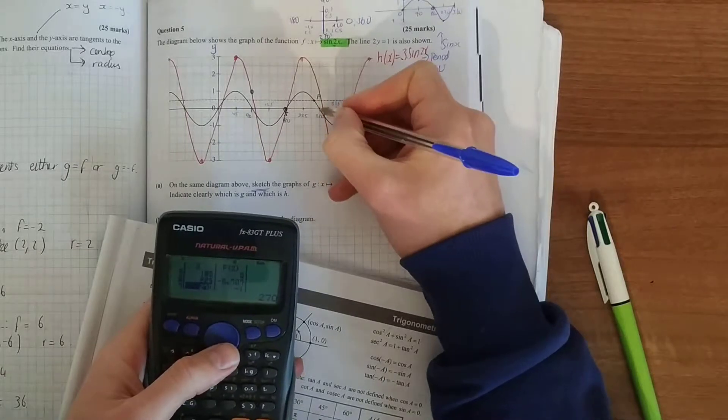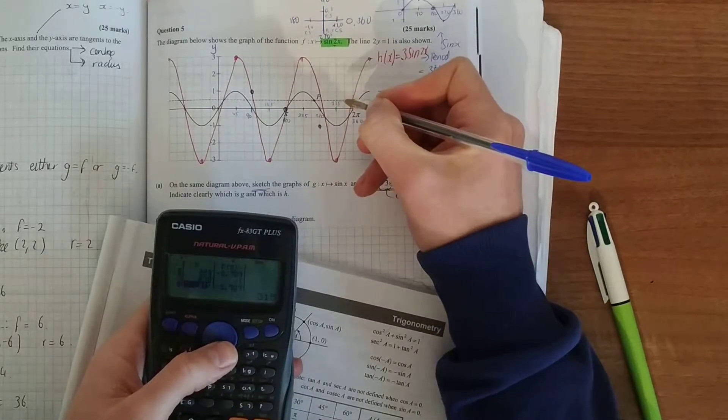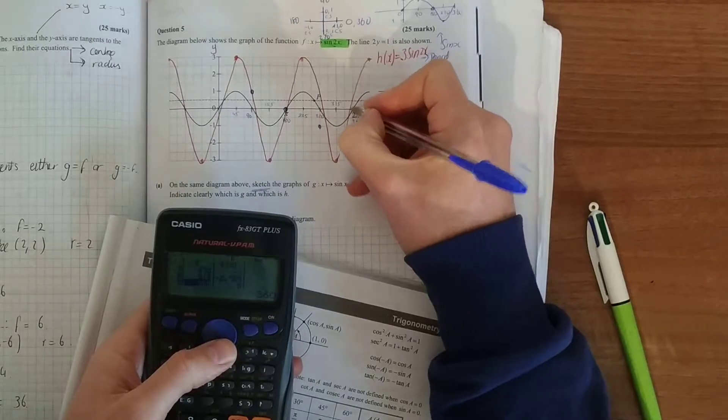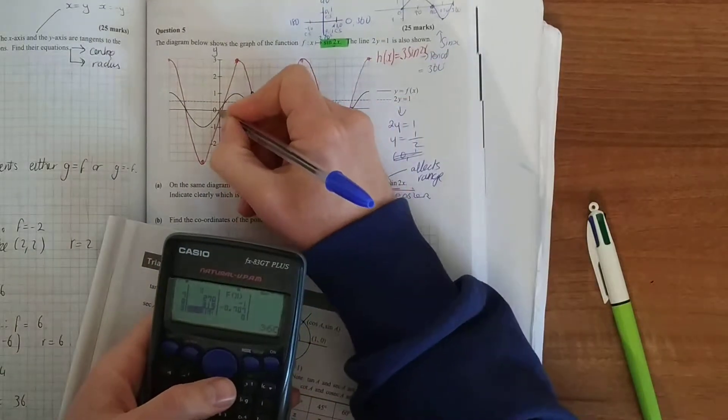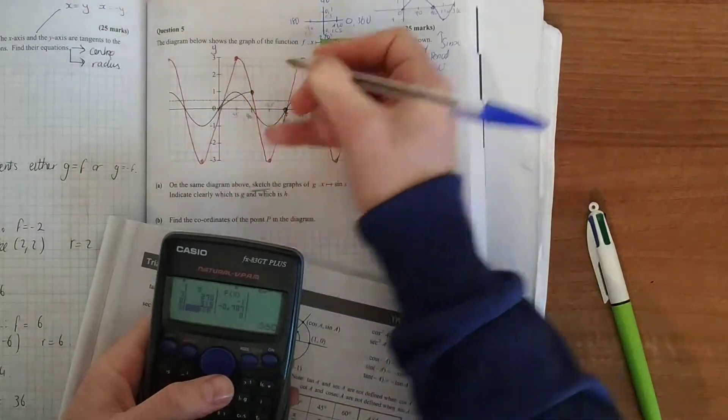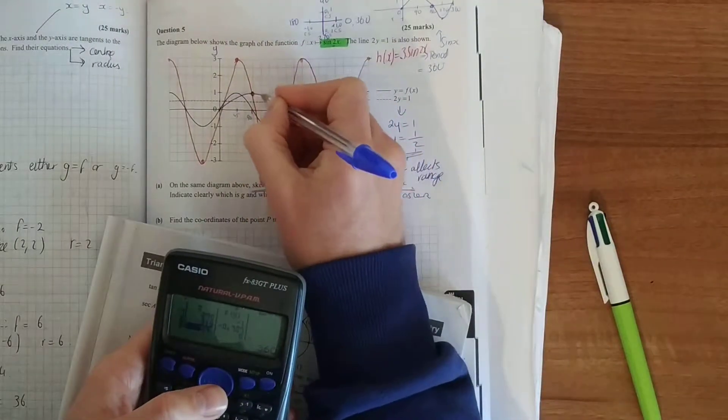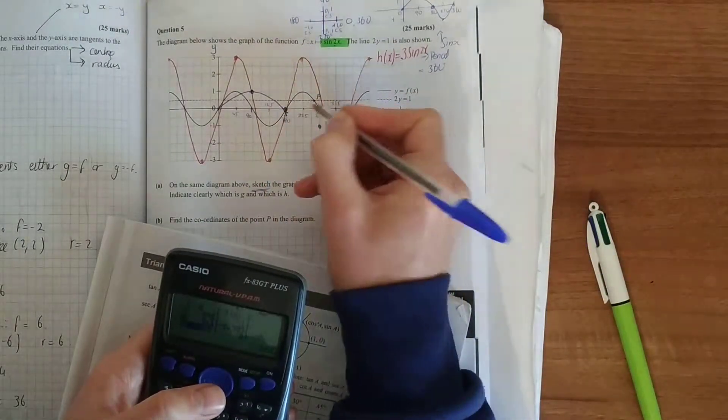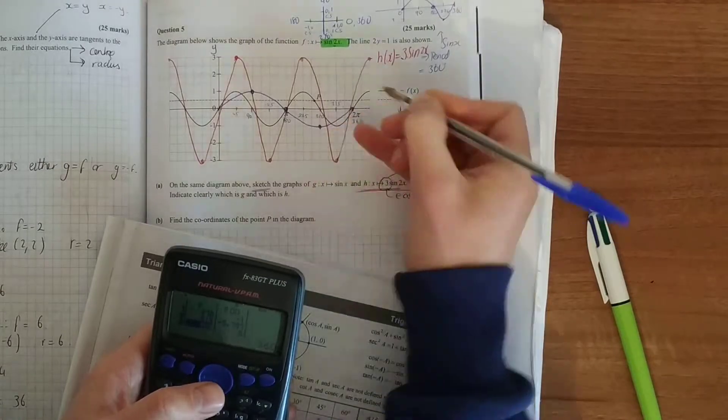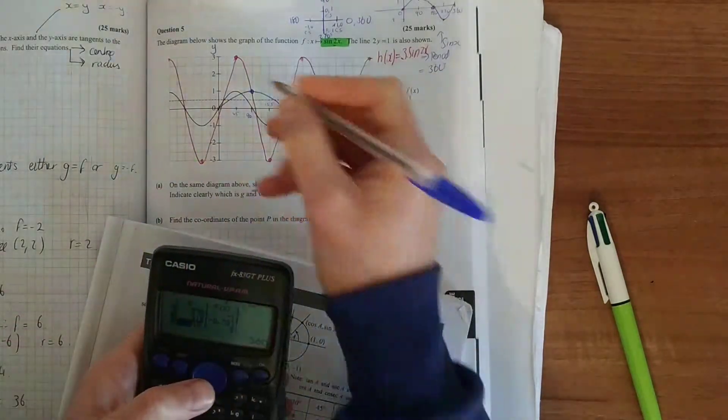Keep scrolling on down: 135, 180 is 0, 270 is minus 1, and then 360 is 0. If you join them up in a nice smooth curve once again, it's very cluttered looking, but if you're unsure do it in pencil for yourself.